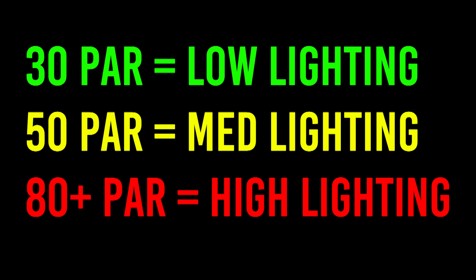So how do we know what's low light, medium light, and high light based on PAR ratings? PAR is measured in micromoles — you don't really need to understand the details, but we just give a number like PAR 20, PAR 30, PAR 50, or what have you. In the planted tank aquarium hobby, we've figured out a guideline: 30 micromoles of PAR is considered low lighting, around 50 micromoles is considered medium lighting, and anything over 80 micromoles is considered high lighting.